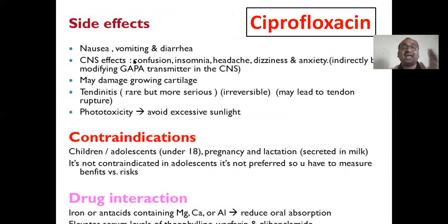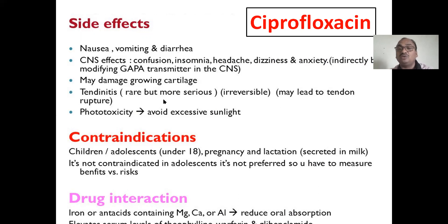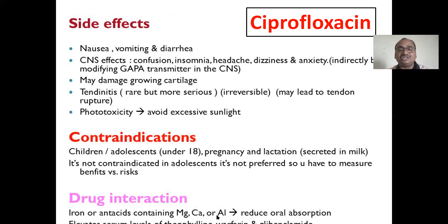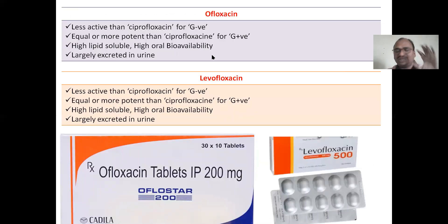Side effects of ciprofloxacin: nausea, vomiting, diarrhea, CNS effects — confusion, insomnia, headache, dizziness, anxiety. May damage growing cartilage — that is also one of the problems. Phototoxicity — avoid excess sunlight. Contraindicated in children and adolescents because it causes arrest of cartilage growth. Drug interactions: iron or antacids containing magnesium, calcium, or aluminium reduce the oral absorption — so don't give ciprofloxacin along with antacids. It elevates serum levels of theophylline, warfarin, and glibenclamide.